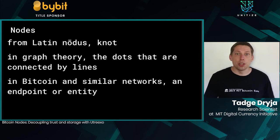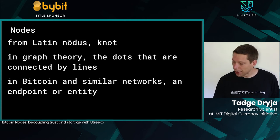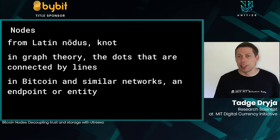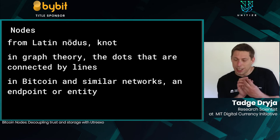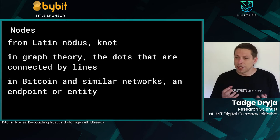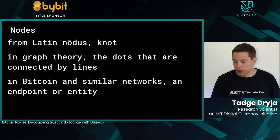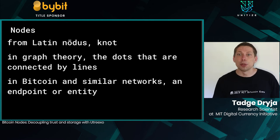So, nodes. What's a node? From Latin, 'nodus' — knot. In graph theory, it's the dots connected by lines. In Bitcoin and similar networks, these are the endpoints — the computers running Bitcoin.